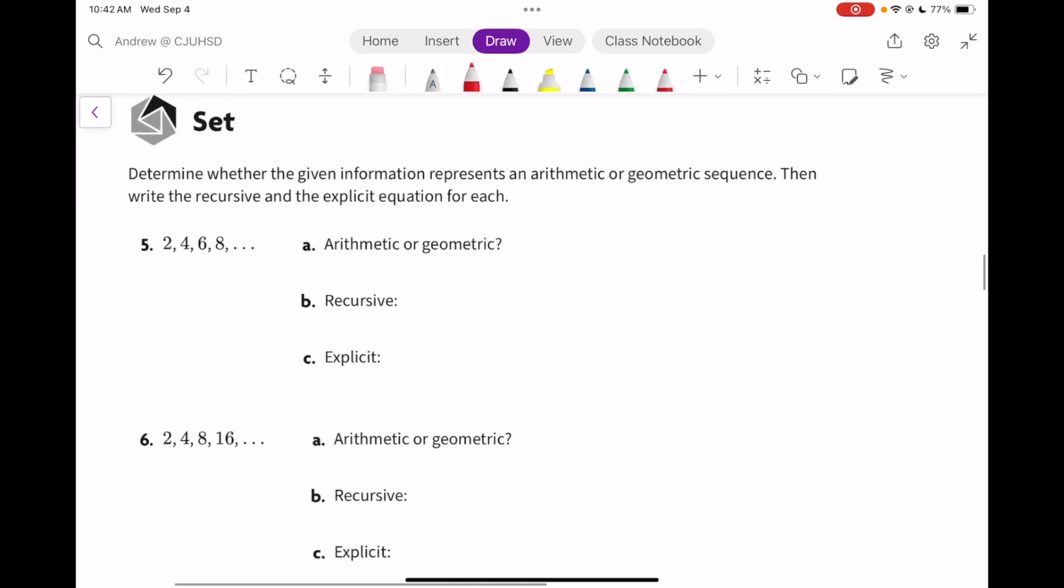Now for our set. It's very similar to the ready, except that we're going to create the recursive and explicit expressions. So this first one is adding 2. 2 plus 2, 4. 4 plus 2, 6. 6 plus 2, 8. This makes it arithmetic where the common difference is 2.